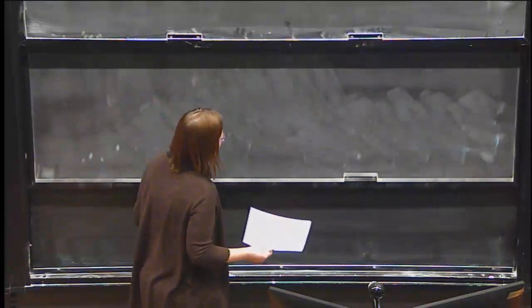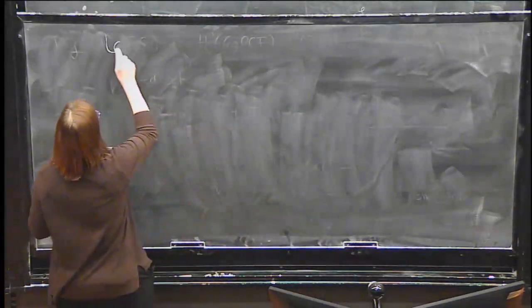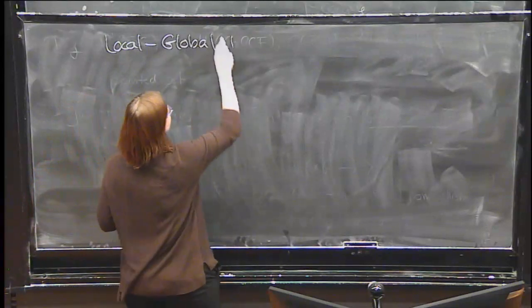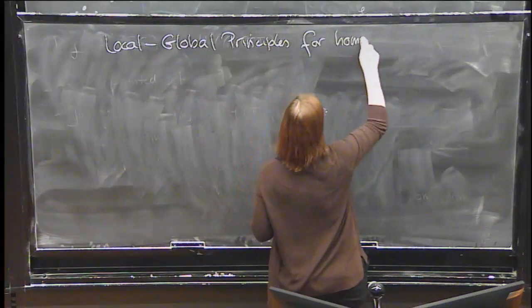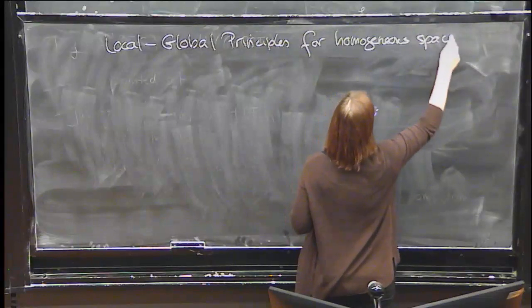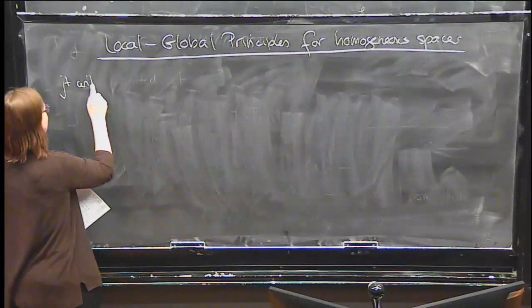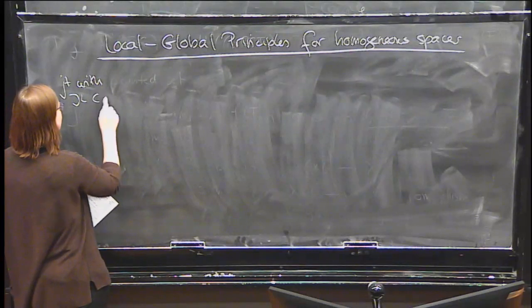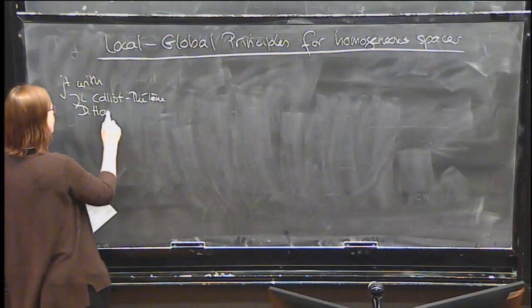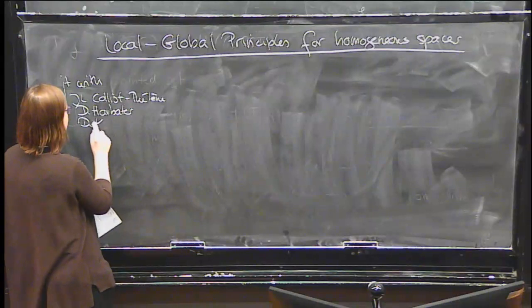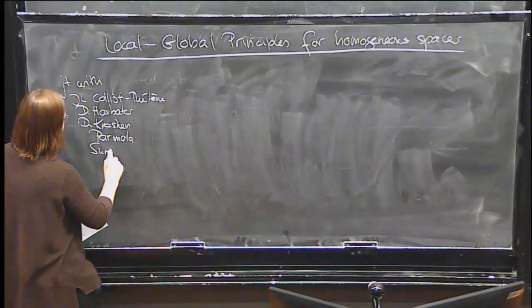Let me write down at least a short version of my long title. I'm going to be telling you about Local Global Principles for Homogeneous Spaces — skipping the 'over arithmetic function fields' part. This is joint work with Jean-Louis Colliot-Thélène, David Harbater, Danny Krashen, and also Parimala and Suresh.